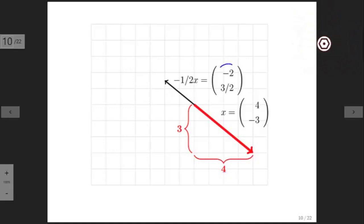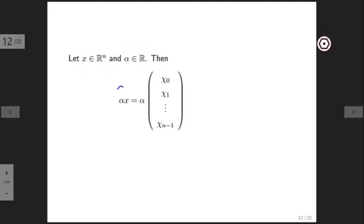Each of the components now has been halved, but also negated. What if we start with a vector x of size n, and we scale it by some real number alpha? Then alpha times x is just alpha times the vector with all of its components exposed.